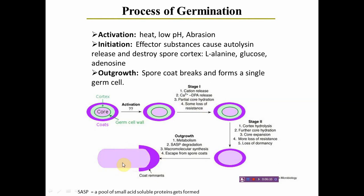The autolytic enzymes break up the spore cortex and spore coat, leading to hydration of the spore core and increased water content. Then outgrowth or core expansion occurs, where the spore coat breaks and a single vegetative cell emerges. In stage one, after release of autolytic enzymes, there is cation release including calcium and dipicolinic acid, partial core hydration, and some loss of refractility. In stage two, sufficient hydrolysis of the spore cortex and further core hydration and expansion occur.